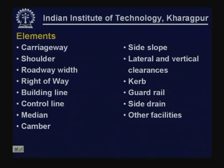Let us have a look at the elements we will cover under cross-section elements: carriageway, shoulder, roadway width, right of way, building line, control line, median, camber, side slope, lateral and vertical clearances, curb, guard rail, side drain, and other facilities.